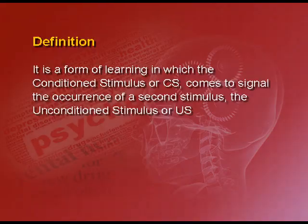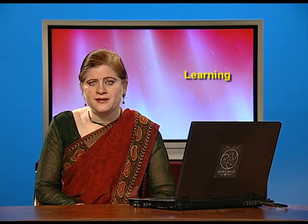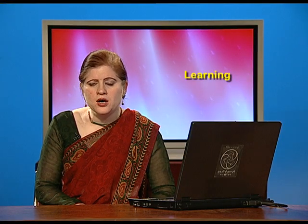By definition, classical conditioning is the form of learning in which the conditioned stimulus, or CS, comes to signal the occurrence of a second stimulus — that is the unconditioned stimulus, known as US. CS and US are abbreviated forms for conditioned stimulus and unconditioned stimulus.